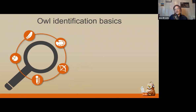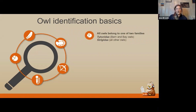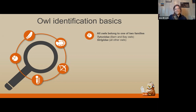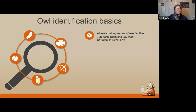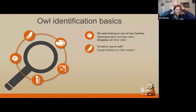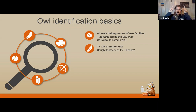Owl identification basics: before we jump into species showcases, here are some things to think about when identifying owls. Owls belong to one of two families: Tytonidae, which is barn and bay owls — the only owl in North America in the Tytonidae family is the barn owl — and Strigidae, which is all other owls. I'll mention which family each owl belongs to. Some owls have tufts: feathers right where ears would be on some animals. Those with ear tufts are called tufted owls, and those with rounded heads or no tufts are called round-headed owls.